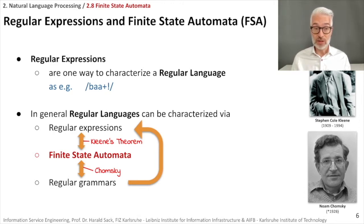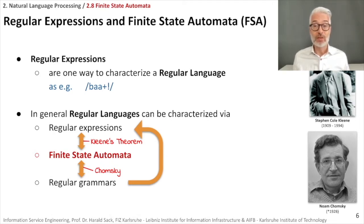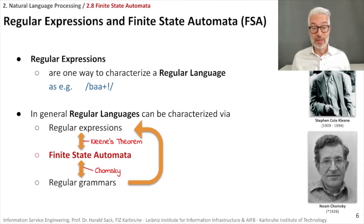With regular expressions you can create so-called regular languages, so regular expressions are one way to characterize regular languages. A regular language is a so-called formal language from formal language theory in theoretical computer science. This kind of formal language is defined with the help of a regular expression. However, there are more means to define exactly these kinds of regular languages. Besides regular expressions, regular languages can also be characterized by so-called finite state automata, which is a theoretical model of computation like the Turing machine.